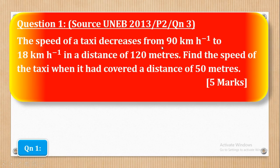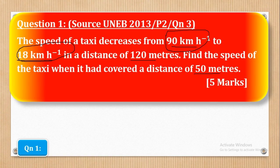Question one says: the speed of a taxi decreases from 90 km per hour to 18 km per hour in a distance of 120 meters. Find the speed of the taxi when it had covered a distance of 50 meters. They've given you the initial velocity which is 90 km/h and the final velocity which is 18 km/h — both need to be converted to meters per second. The distance is in meters so no conversion is needed there.